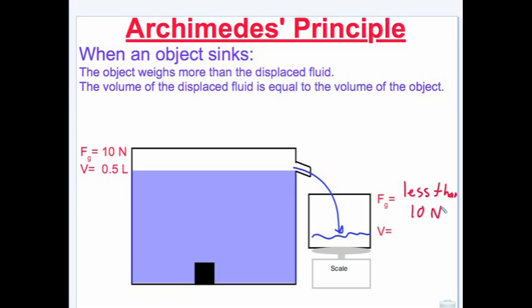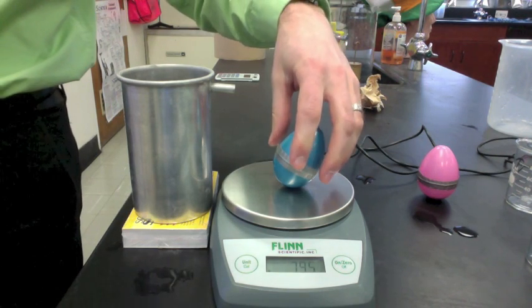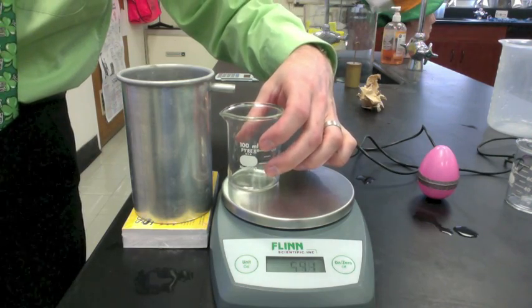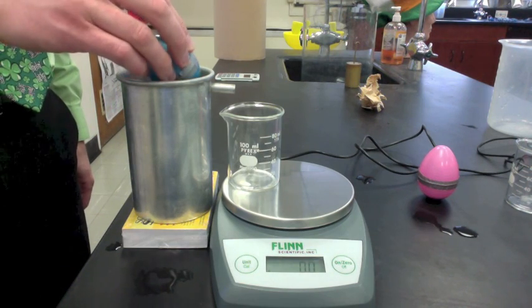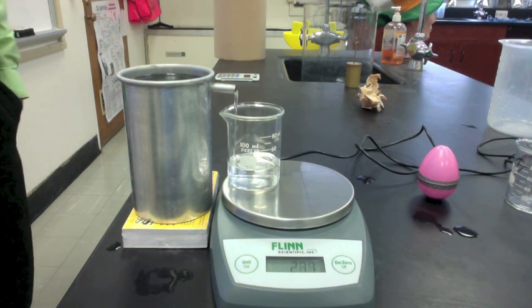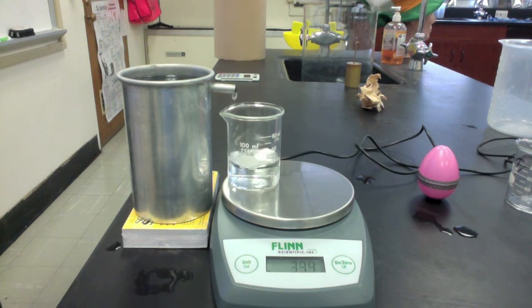The volume of the displaced fluid is equal to the volume of the object because it's totally underwater, but that water weighs less than the object. This blue egg weighs 79.5 grams. When placed in water, it sinks and displaces its volume in water, which we can see is 60 milliliters. That displaced water only weighs 35 grams, which is why it sinks. Archimedes' Principle says that if the object weighs more than the water it displaces, it sinks.